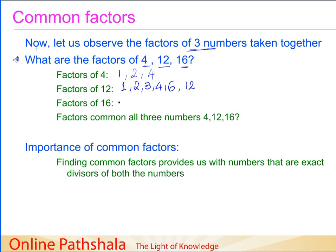Now what are the factors of 16? 1 is a factor of 16 by default. 2 — yes, 8 twos are 16. 3 is not a factor. 4 — yes, 4 fours are 16. 5 is not a factor. 6 is not a factor. 8 — yes, 8 multiplied by 2 is 16. 9 is not a factor. And then we are left with 16 itself as a factor. So the factors of 16 are 1, 2, 4, 8, and 16.